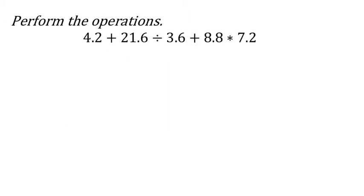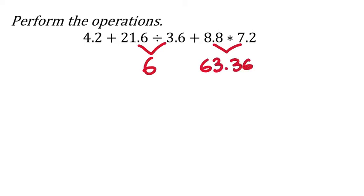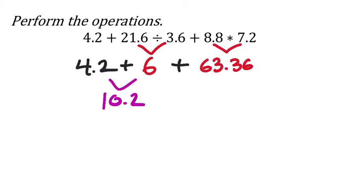Order of operations again. First, any parentheses — there are none. Then exponents — none either. So we go to multiplication and division. There's division in the middle term: 21.6 divided by 3.6 — enter — that's 6. Then multiplication: 8.8 times 7.2 — enter — 63.36. New expression: 4.2 plus 6 plus 63.36. 4.2 plus 6 is 10.2, plus 63.36 is 73.56.